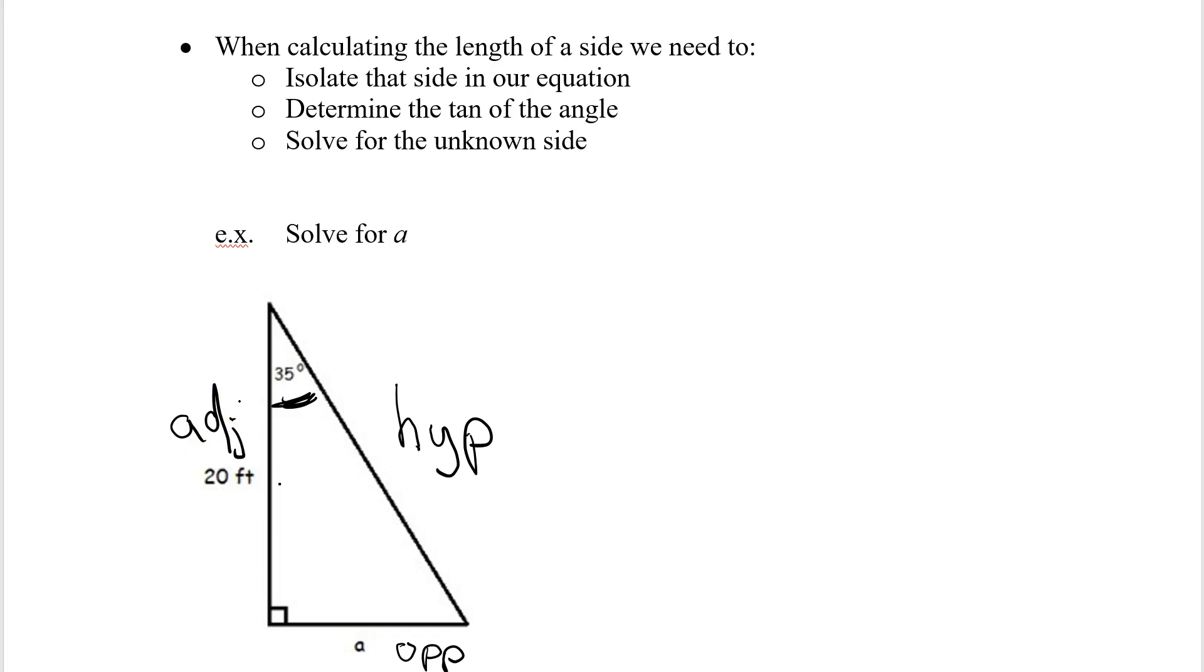So the first thing I do when I calculate these is I write down my formula. Tan of the angle is the opposite over the adjacent. I'm now going to plug in what I know. Well, I know the angle. The angle is 35. So tan of 35 equals the opposite, which I'm going to change to x, because I'm looking for it, over the adjacent, which is 20. So now there's no math I can really do. I can't take x divided by 20, but what I can do is figure the tan of 35.